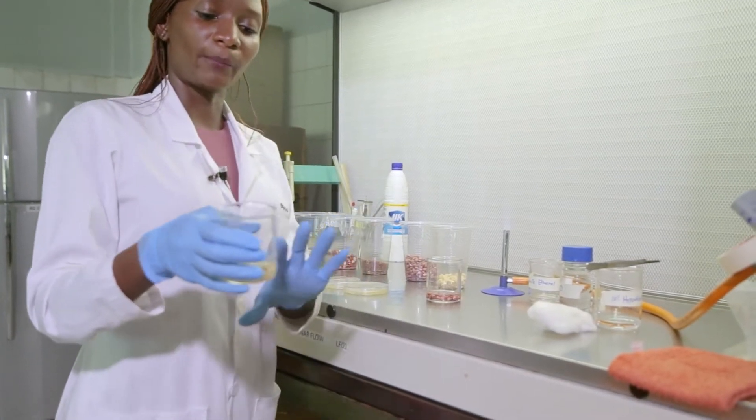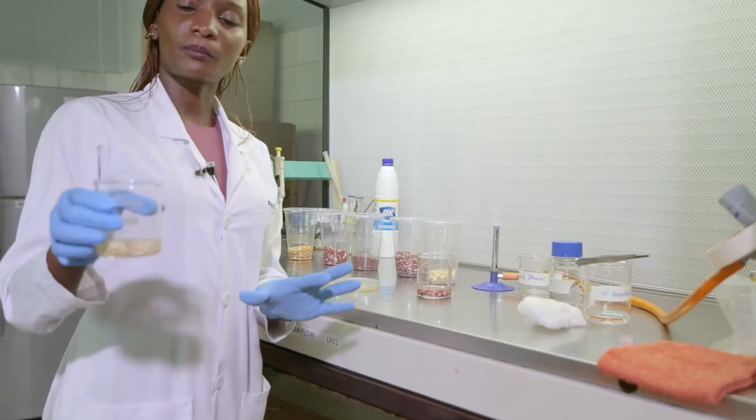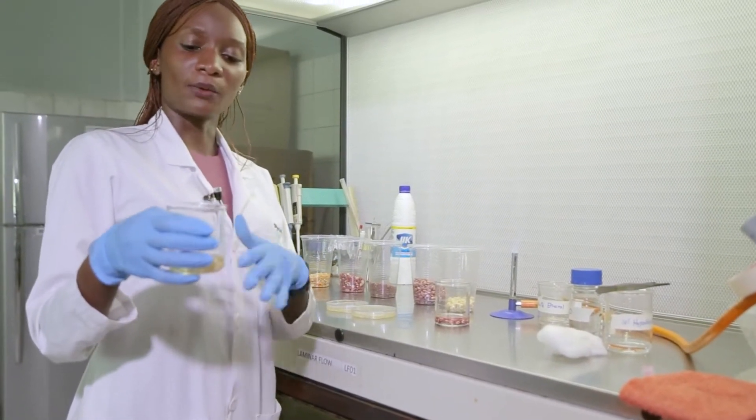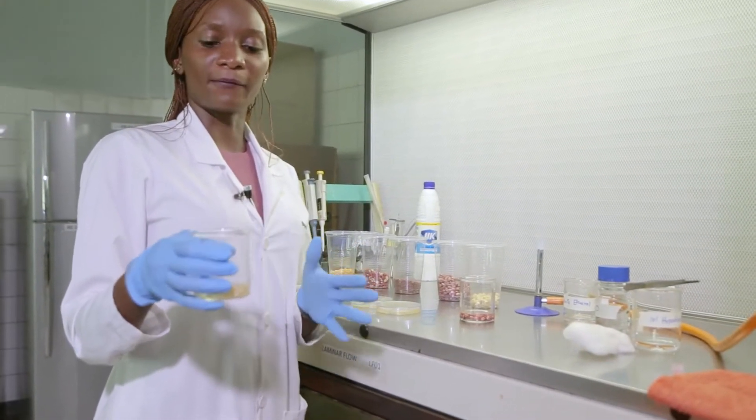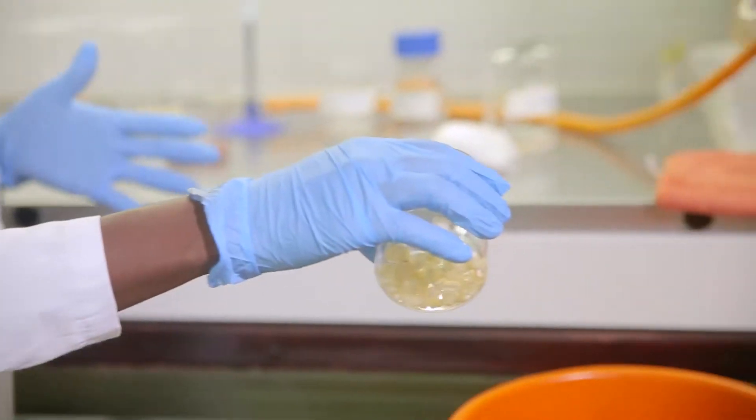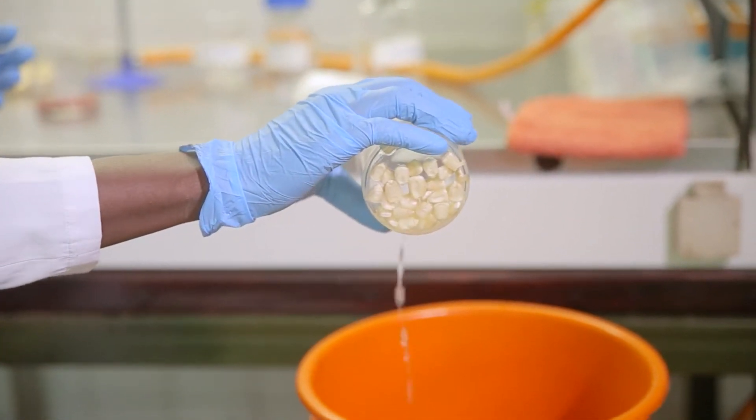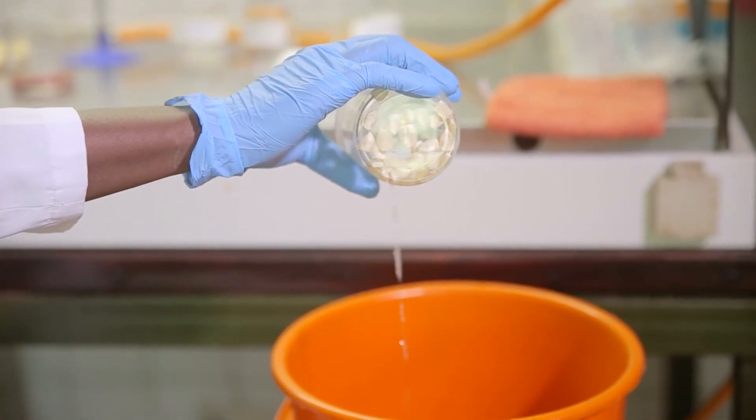So the reason I put the hypochlorite here first: I want to disinfect the outside part of the seeds. I want to remove any fungi that may be on the surface of the seeds, such that whatever grows will be coming from the internal part of the seed or the grain.